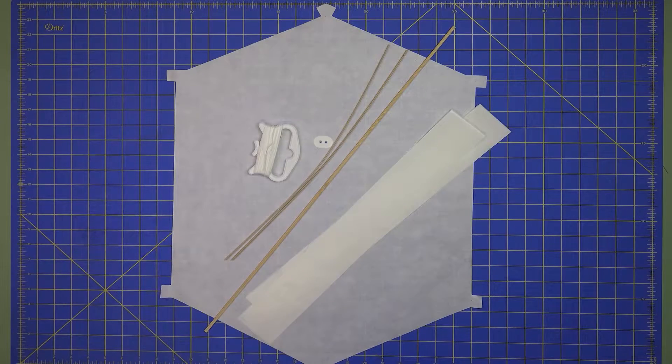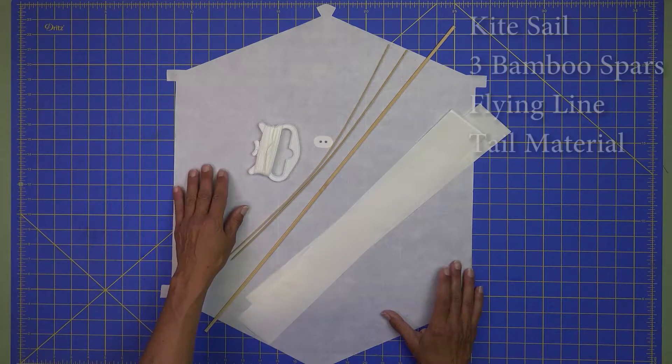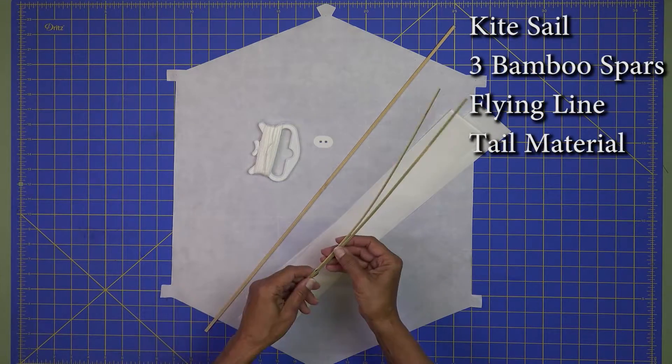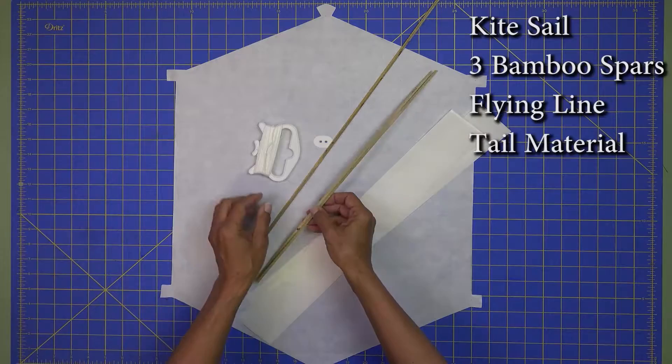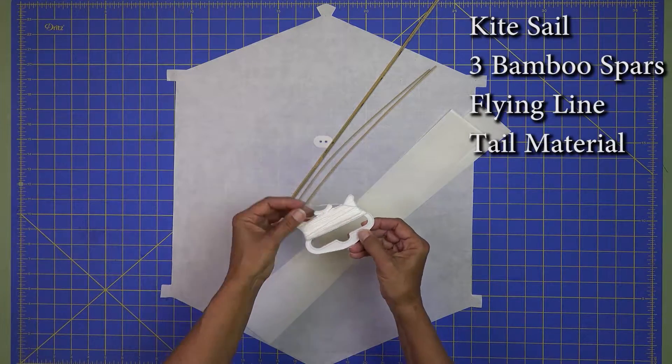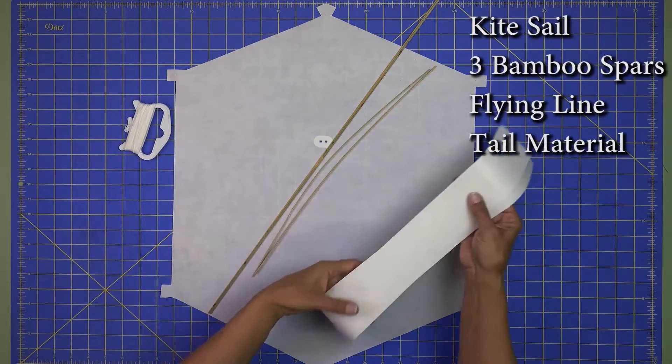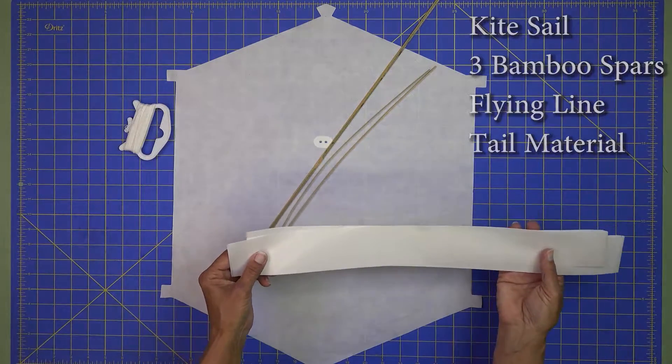This is the Simple Rokaku. Each kite kit comes with one skin or sail, three bamboo spars, a winder with flying line, and two strips of paper to use for tail.